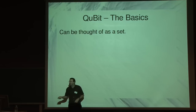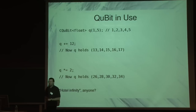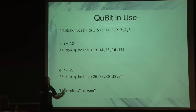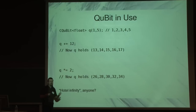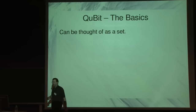Variables have everything in them at the same time, which means any operation is sort of the multiply of those — there's a lot of possibilities. If you've got a qubit with all the values between 1 and 5, and you add 12, you then have all the values between 13 and 17. If you multiply it by 2, then you have all the values between 26 and 34 in multiples of 2. Which means if your hotel runs out of rooms, and you have a hotel with an infinite number of rooms, you just move everyone to the double and there's lots of space in between.